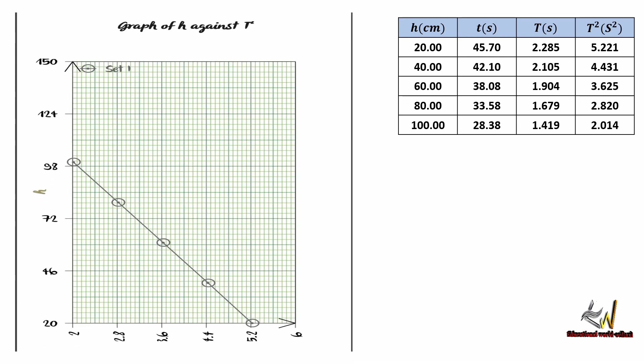Now we have our complete table of values. Note that the decimal places are uniform and each column header has the corresponding units. Remember we are plotting the graph of h against T², and the graph will appear as a straight line sloping downwards — that is, a negative slope.